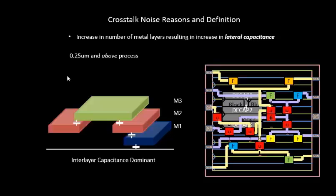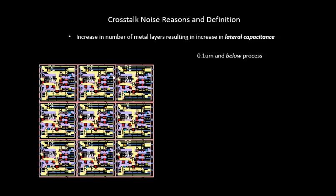Now let's move on to the next type where we were looking into 0.1 micron and below process. As we explained in the previous videos, this was the example we were taking for consideration: we had nine instances of the same chip being deployed on the same area. Due to this, the number of standard cells got increased — initially let's say 20, now it's 20 into 9.